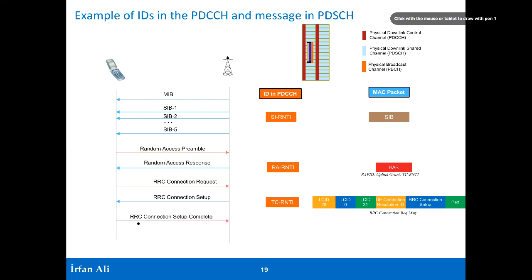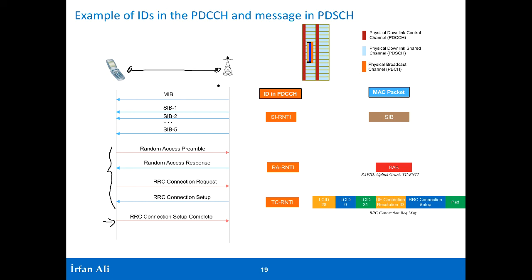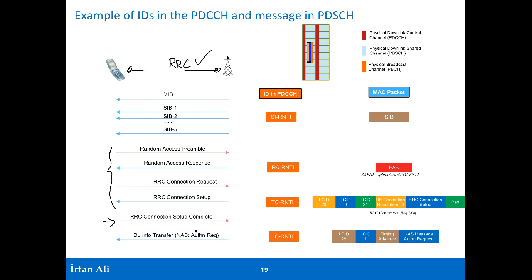The mobile then sends RRC connection setup complete. This sequence of five messages — messages 1 through 5 — constitutes the random access procedure. Message 5 (RRC connection setup complete) is the first message after random access succeeds and it also completes the RRC connection establishment between the mobile and the base station.